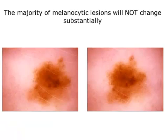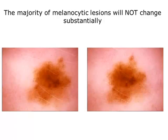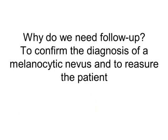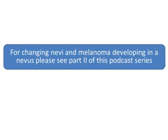Which changes can you expect in nevi? The majority of nevi will not change substantially during a follow-up period of one year — even those called atypical or dysplastic nevi. With a reasonable monitoring interval of 6 or 12 months, you will not find major changes in most nevi of adults; this situation is different in children. So why do we need follow-up? Not only to diagnose melanoma as early as possible, but also to confirm the diagnosis of a melanocytic nevus because there is no change, and to reassure the patient and ourselves. For changing nevi and for melanoma that developed in a pre-existing nevus, please see part 2 of this podcast series.